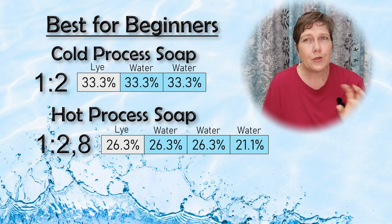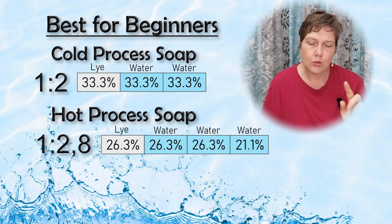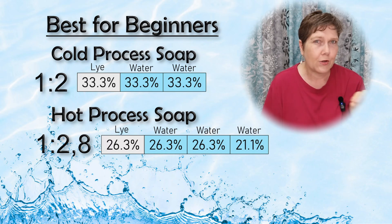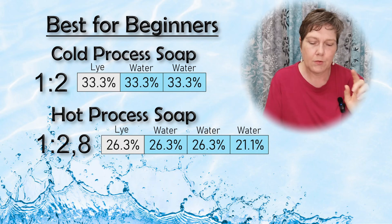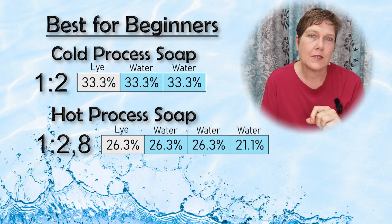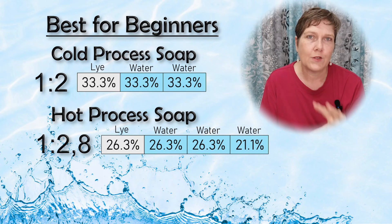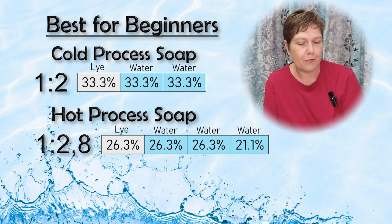A good ratio for hot process is one-to-two-point-eight, which is nearly one-to-three. At one-to-three you can sometimes struggle to get a stable emulsion, so one-to-2.8 is a very good place to start. If you want to enter a percentage in the calculator, 26% lye concentration is a good starting point for hot process soap making.